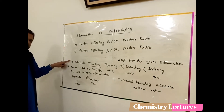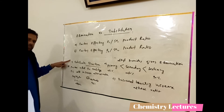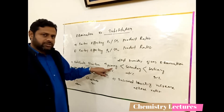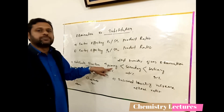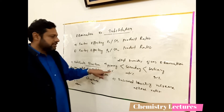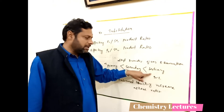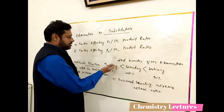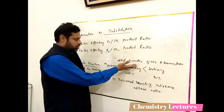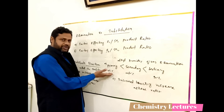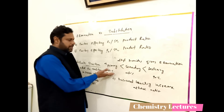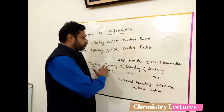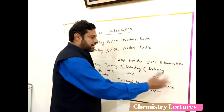Substrate structure is important — by changing it, we can get more alkene product. If we have a primary alkyl halide, it will give more substitution and less elimination. A tertiary alkyl halide gives maximum alkene and less substitution. For example, a primary alkyl bromide gives only 10% elimination and 90% substitution, whereas a tertiary alkyl bromide gives 90% alkene. Going from primary to tertiary increases elimination and decreases substitution.